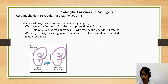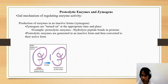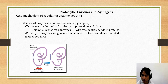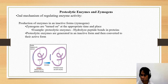As shown in the illustration, the zymogen is the inactive form of the enzyme. There is a section in the enzyme that is removed, and when that section is removed, the active site of the enzyme becomes accessible. When that section has been removed, the proteolytic enzyme is said to be active.